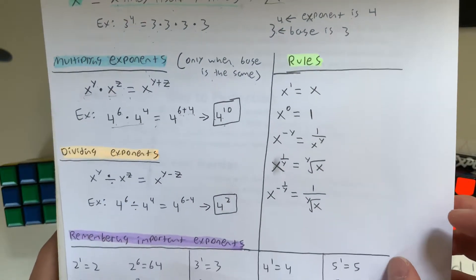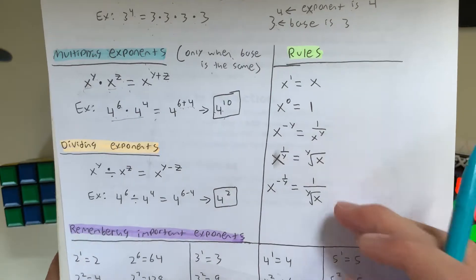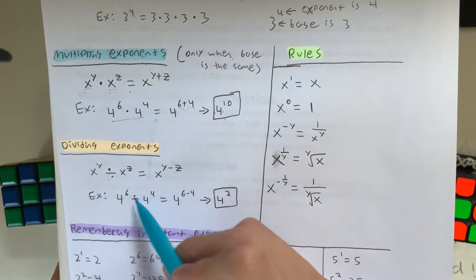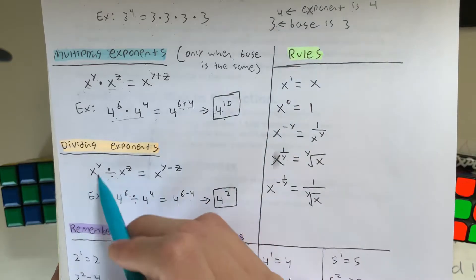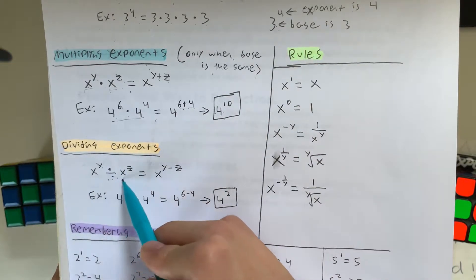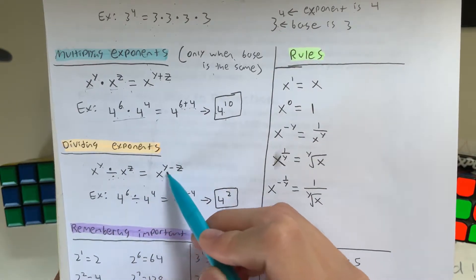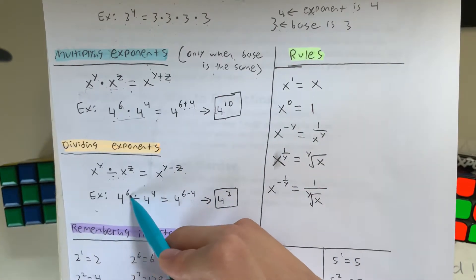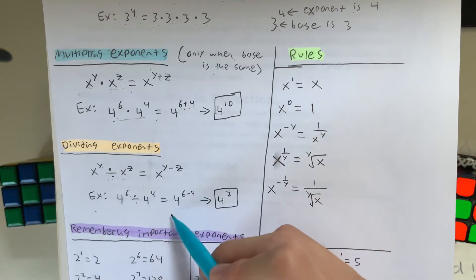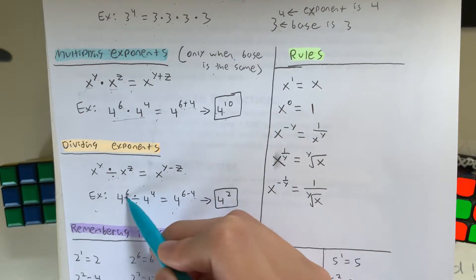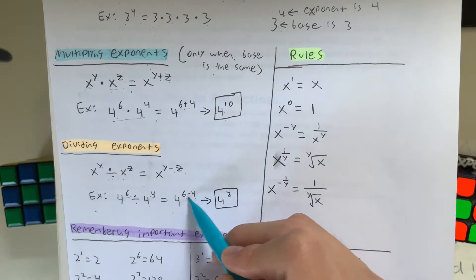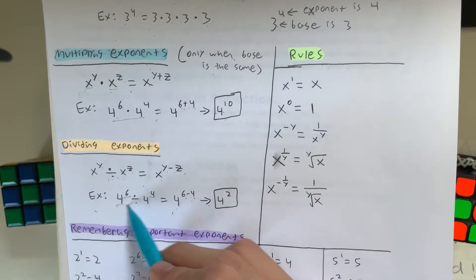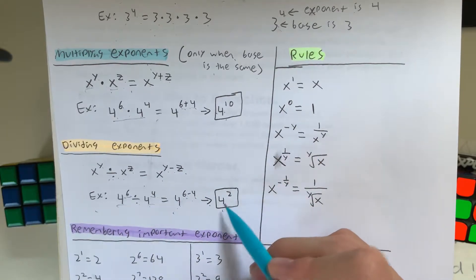And another rule applies when you're dividing exponents. So when you're dividing exponents, you have to subtract the exponents. So in this case, x to the y divided by x to the z is equal to x to the y minus z. So an example is, 4 to the 6 divided by 4 to the 4th is equal to 4 to the 6 minus 4, and what's 6 minus 4? It's 2, meaning that this equation is equivalent to 4 to the 2nd.